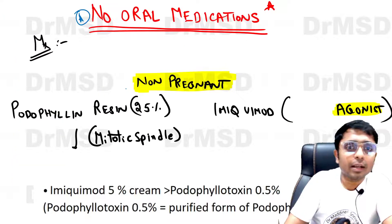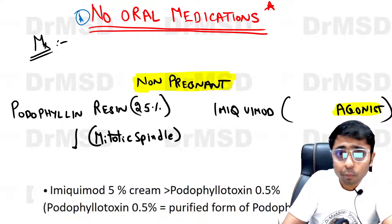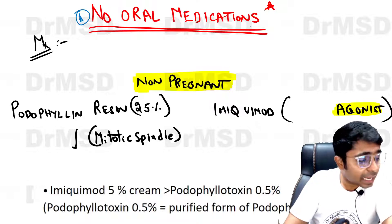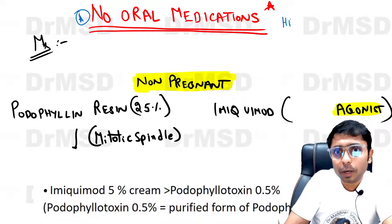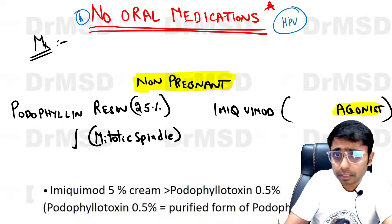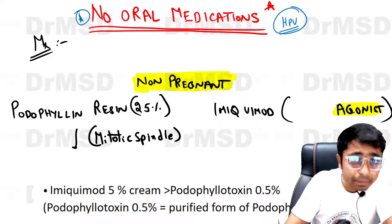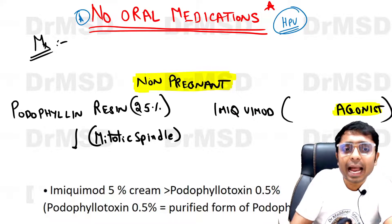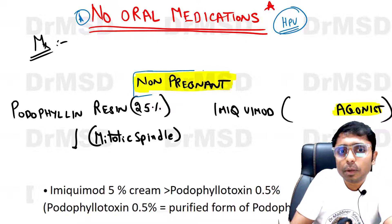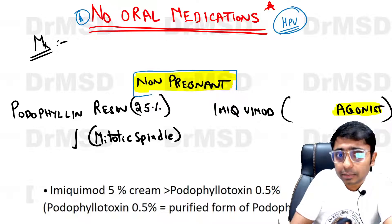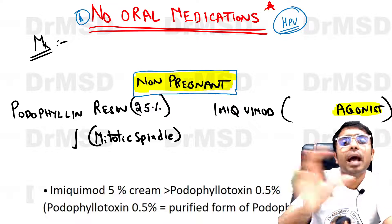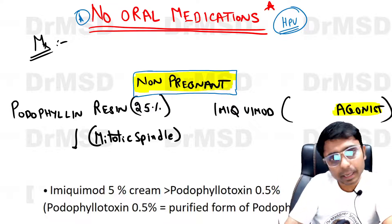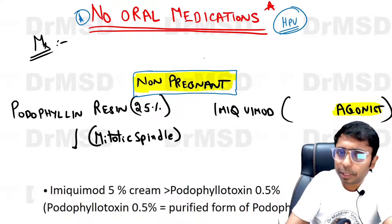Most importantly, you must remember that there are no oral medications in the treatment of human papilloma virus — this point was asked in the AIIMS exam. The treatment of HPV-producing anogenital warts can be divided broadly into non-pregnant women and pregnant women.